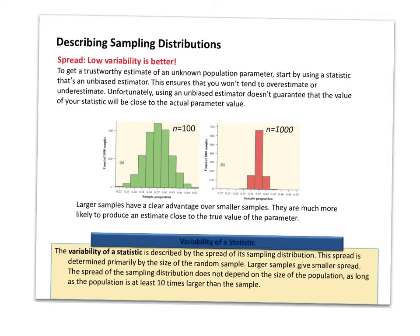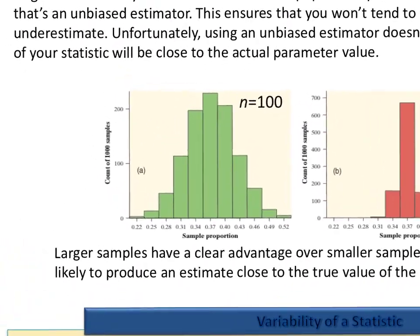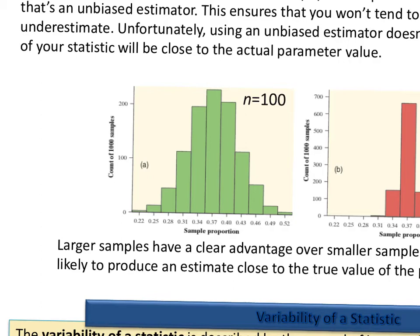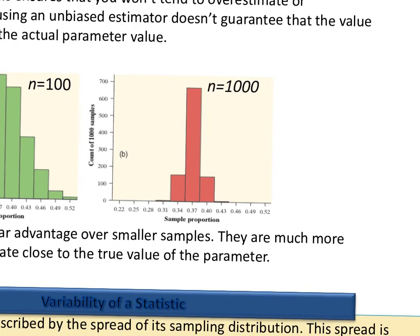To trust any statistic from our sample to make a prediction about our population parameter, we need an unbiased estimator. But how do we know when something is unbiased? The general rule of thumb is that the larger the sample size, the less the standard deviation and the more precise our answer. Looking at two graphs: one with a sample size of 100 is centered around 0.37 but ranges from 0.22 to 0.52 — any single sample could be off by as much as 0.15. With a sample size of 1,000, there's much less variability — any single sample will be no more than about 0.03 off from the center. The bigger the sample size, the more precise your answer and the more confident you are that it predicts the total population.